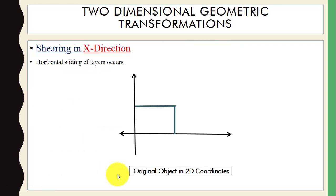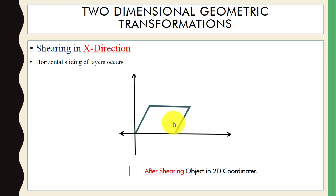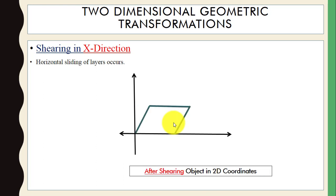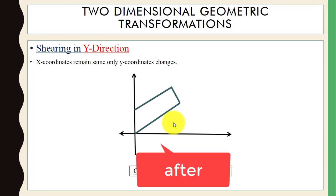Here you can see shearing in the x-direction. When you apply shearing in the x-direction, horizontal sliding of layers occurs. This is the object in the 2D coordinate, and after applying shearing in the x-direction, you can see the object has changed — comparing before and after.